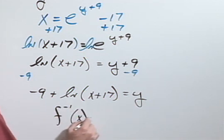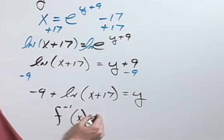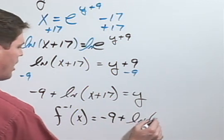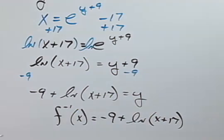my inverse function, f inverse x, equals negative 9 plus the natural log of x plus 17.